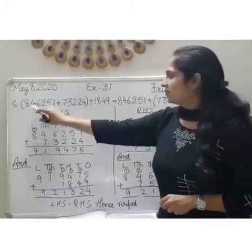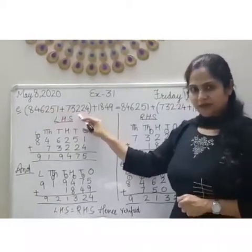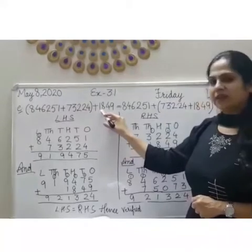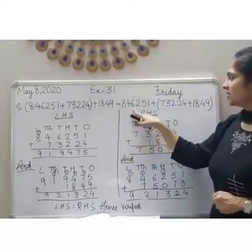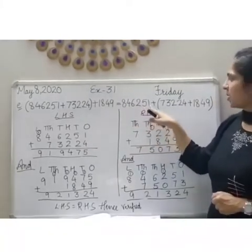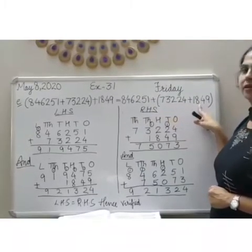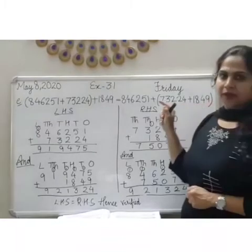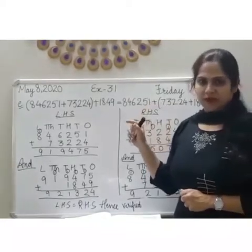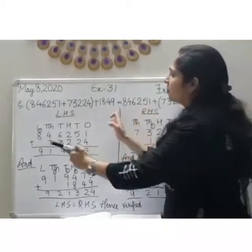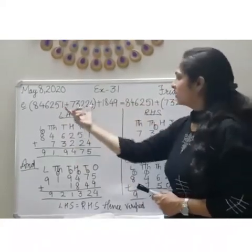Part E: 8,46,251 plus 73,224 plus 1,849 is equal to 8,46,251 plus 73,224 plus 1,849. This Part E involves associative property of addition. In associative property of addition, the sum of 3 or more numbers will remain the same regardless of their grouping.